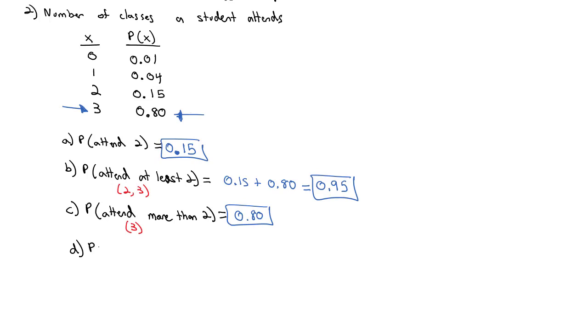We can look at this the other way too. Let's find the probability that a randomly selected student attends less than two classes. If we're attending less than two classes, less than two means they could have attended zero or one. Less than two, notice, does not include the number two because it's strictly less than two. So now I'm combining zero and one together as probabilities. So the zero probability is 0.01 plus the one probability is 0.04, which means we've got a total probability of 0.05 that a randomly selected student attends less than two classes.